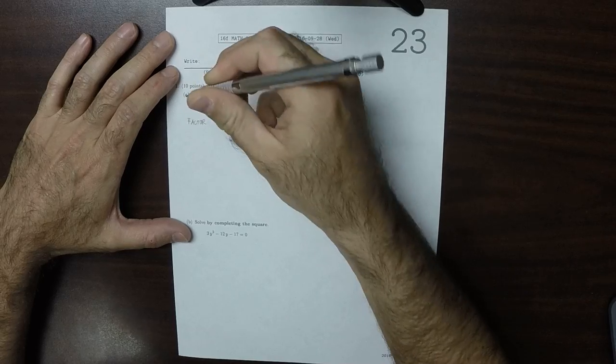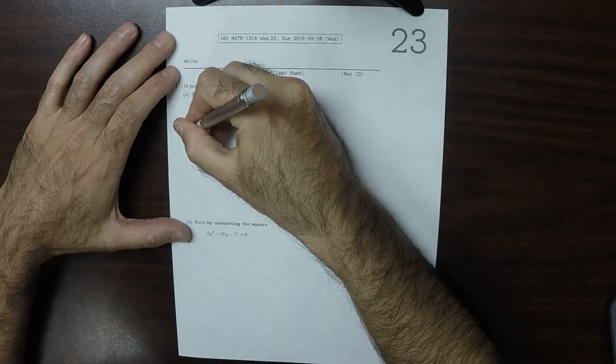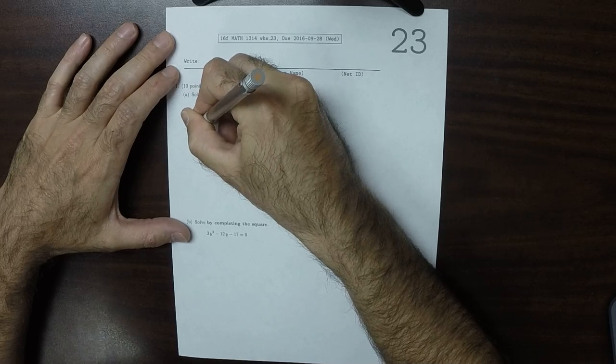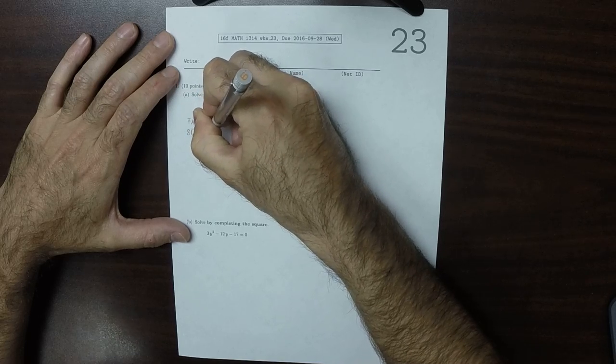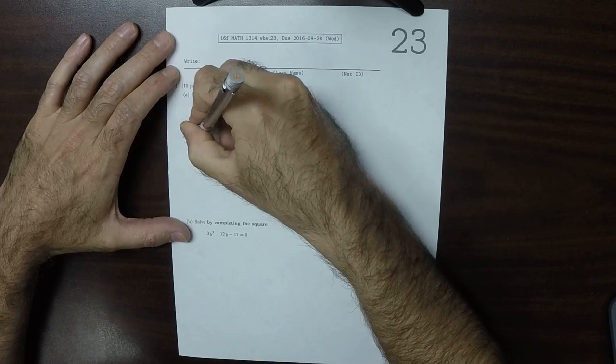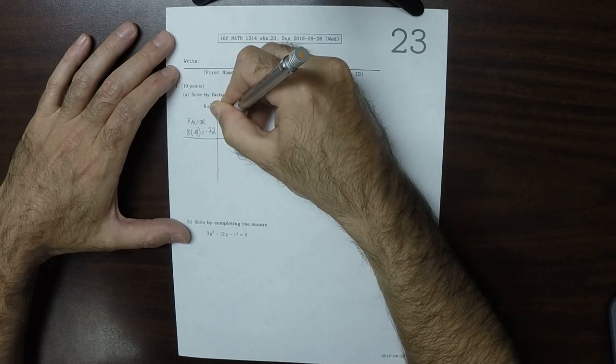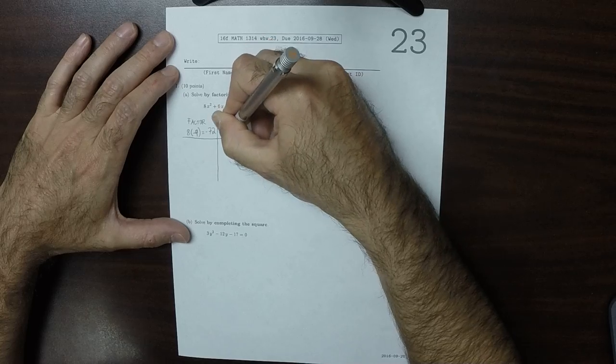We want to find a factorization of 8 multiplied by negative 9, which is negative 72, and we want the sum of those factors to be 6.